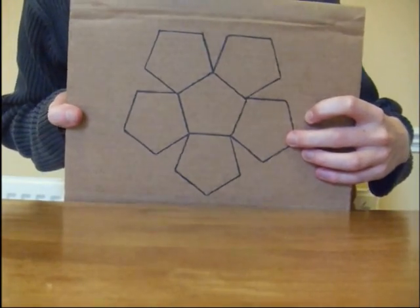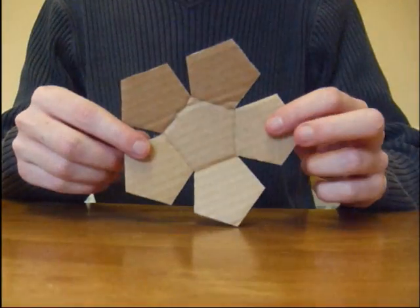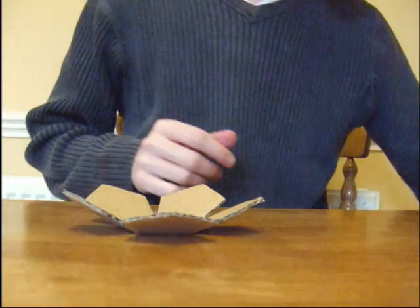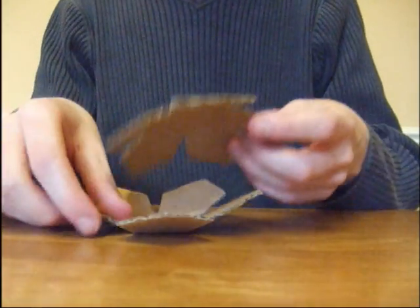Cut that out and score it. And if you do that, you'll get something like this. Now, this is half of your dodecahedron, so you'll need two of them, like that.